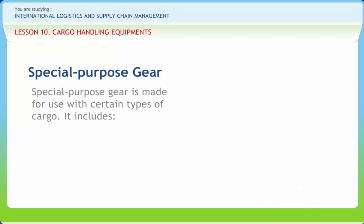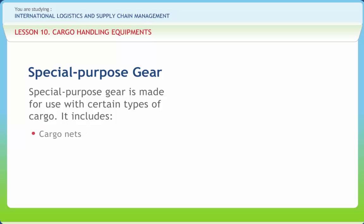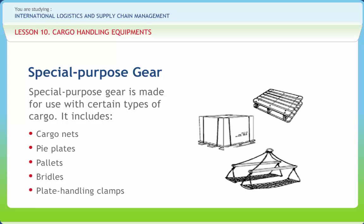Special purpose gear is made for use with certain types of cargo. It includes cargo nets, pie plates, pallets, bridles and plate handling clamps. Cargo nets are usually made of manila rope, but nets of wire rope are used for special cargos. Cargo nets are used to handle loose packages that are not all the same size. When making up a draft in a cargo net, cargo handlers should stack the cargo so that the crushing effect of the net is kept to a minimum.